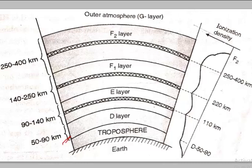It starts from around 50 kilometers above the earth and extends up to 400 kilometers. Within the ionosphere we have various other layers — the ionosphere is further subdivided into several layers.